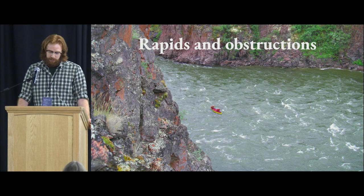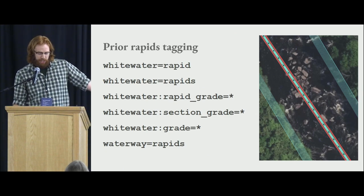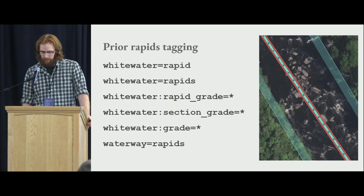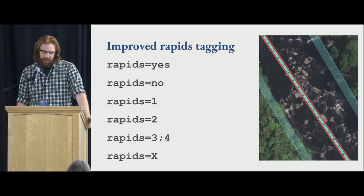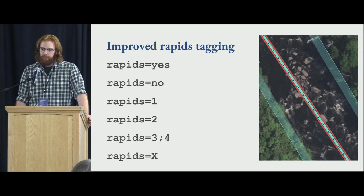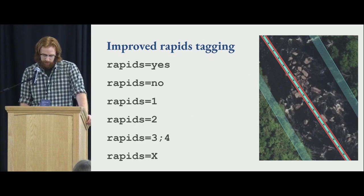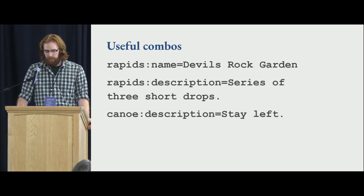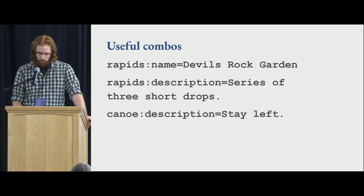Really important is rapids and obstructions — this can be a matter of life and death. You don't want to start paddling a creek and suddenly hit Class 6 rapids. Prior to this there was a whitewater scheme, which I found inconsistently used with all different sorts of tags meaning the same thing. I recommend using improved tagging: you can say rapids=yes or no on a segment, then add a number to indicate the international rapids classification. If it's not runnable at all, you can use rapids=X. You can add different information about the rapids — name, description — and give general canoe descriptions on waterways to give people instructions or recommendations on how to paddle.